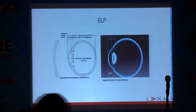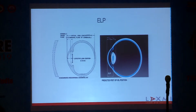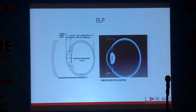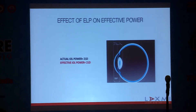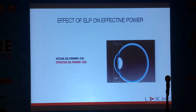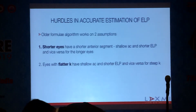So what is effective lens position? Effective lens position is the distance between the corneal vertex and the predicted IOL plane. If postoperatively the IOL sits in the same position as predicted, we land in emmetropia. If the IOL sits slightly in front of the predicted ELP, we land in myopia.